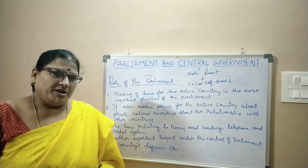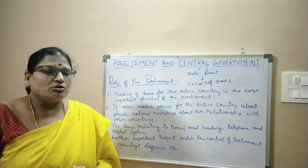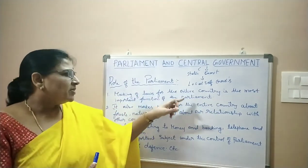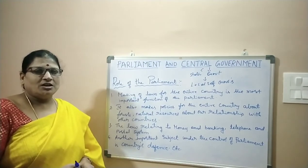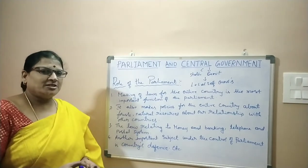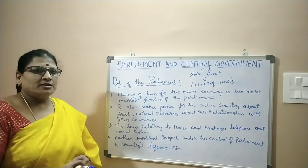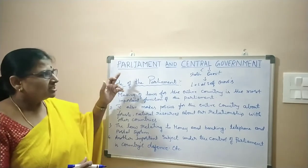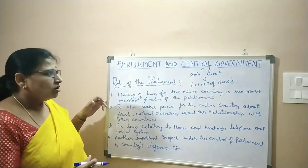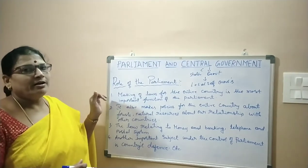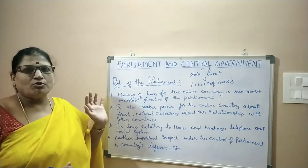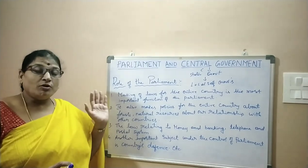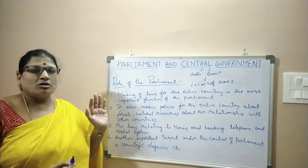What is the role of this parliament? Making laws for the entire country is the most important function of the parliament. In the previous class — that is 7th class — you have learnt about how laws are made in the state. The state legislature makes laws under the subjects contained in the state list. Here, the parliament — the central government — makes laws for subjects related to the entire country. Before it is considered as a law, it is called a bill.